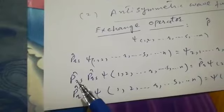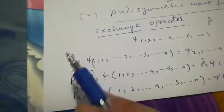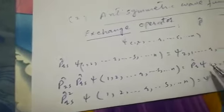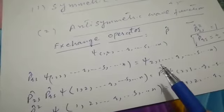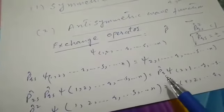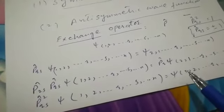If we again apply that exchange operator to the new wave function psi(2, 1), applying P of r,s a second time will interchange particles two and one back again. So we get P_rs squared acting on psi(1, 2), and the result is psi(1, 2, ..., r, s, n) — it remains invariant.